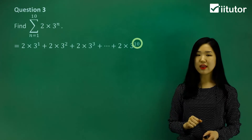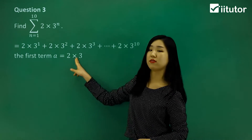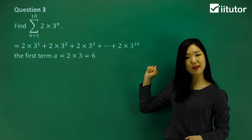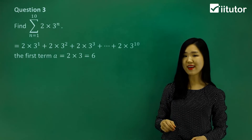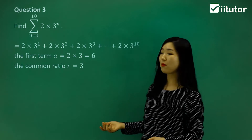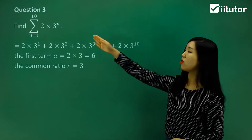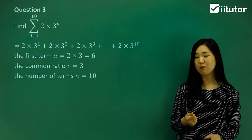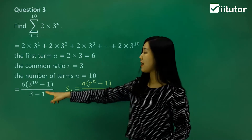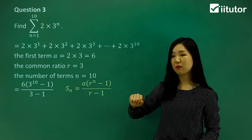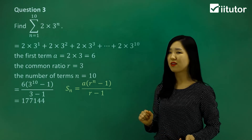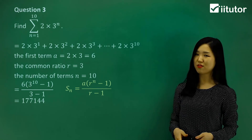The first term is 2 times 3, which is 6. We're multiplying by 3 each time to get every consecutive number, so it's a geometric series with a common ratio of 3. The number of terms is 10, since n goes from 1 to 10. Using the geometric series sum formula: a equals 6, the common ratio r equals 3, and n equals 10. Replace them all in and calculate. Again, it's quite a large number, so if you had to do it manually it would take a lot of time. Use the geometric series formula — it's the easy way.